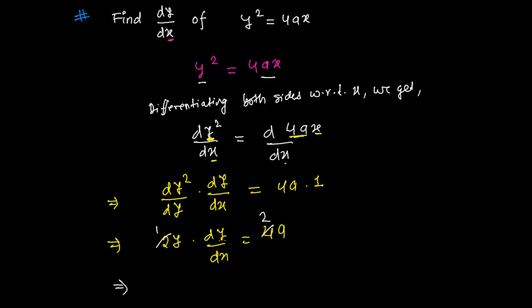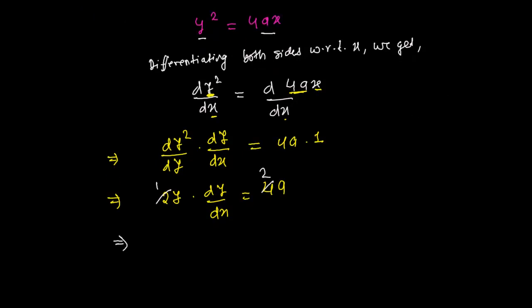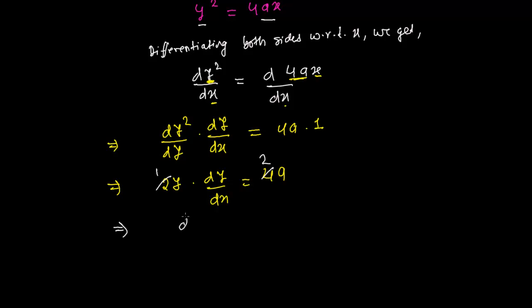So now you know that every time we need to keep dy over dx one side. So I am putting dy over dx on one side and rest of this everything into the another side. So it is 2a and this y is there. 2a over y. And here we are done.